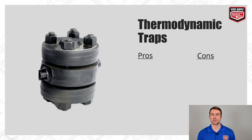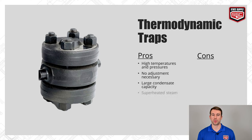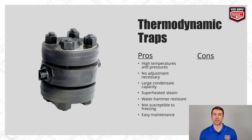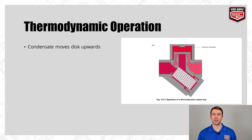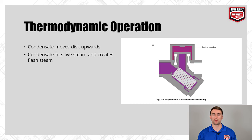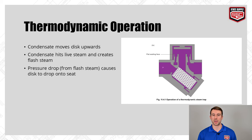Lastly, we have our thermodynamic traps. Some pros are that they're able to handle high temperatures and pressures, there's no temperature adjustment required, they can handle large condensate loads as well as superheated steam, they resist water hammer, are not susceptible to freezing, and they're easy to maintain. One drawback is that they're extremely loud. In operation, condensate enters the trap chamber and forces the disc up. The condensate then hits live steam, creating flash steam due to the pressure drop in the chamber. This pressure drop creates a vacuum which causes the valve to shut and prevent live steam from passing through.